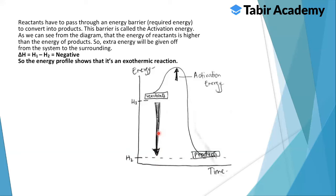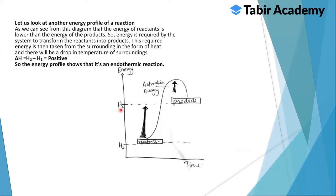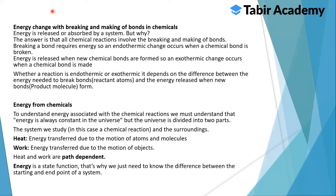From the diagram we can see that the energy of the reactants is higher than the energy of the products, so energy will be given off from the system to the surroundings. In an endothermic reaction, energy is required by the system to transform the reactants into products. This required energy is taken from the surroundings in the form of heat, causing a drop in temperature of the surroundings, and delta H is positive.